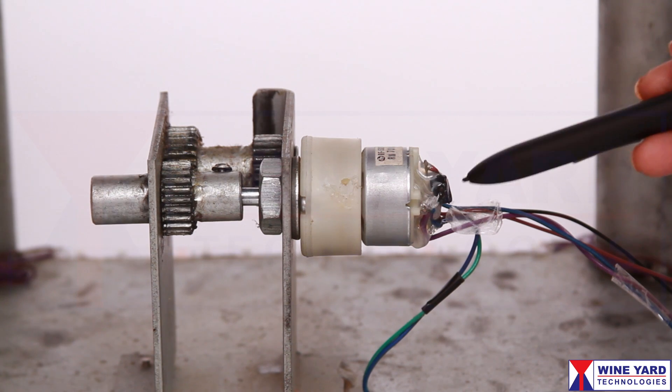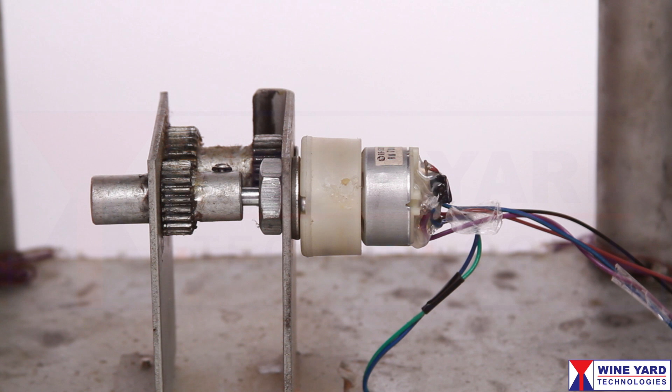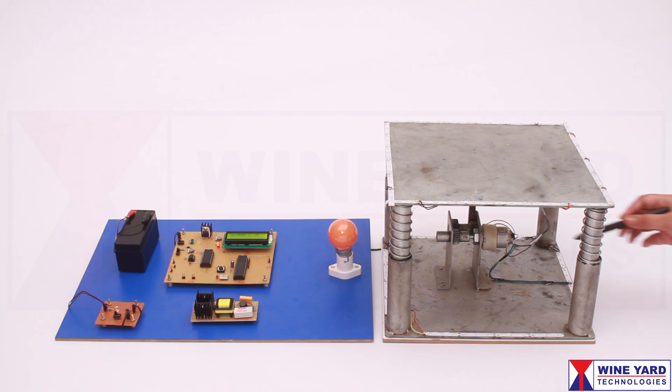This is a simple DC geared motor which is used as a generator here. This DC generator is mechanically coupled with the suspension plates.